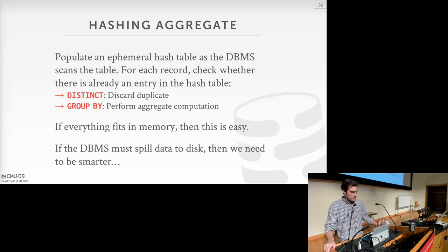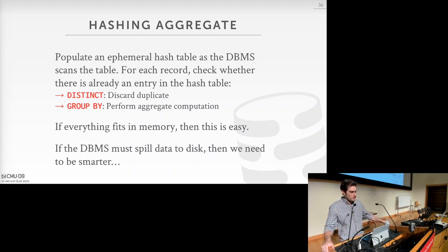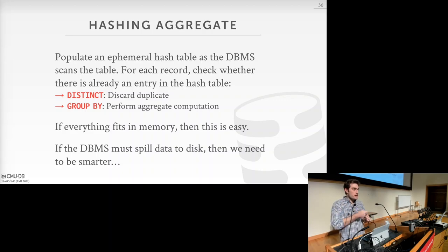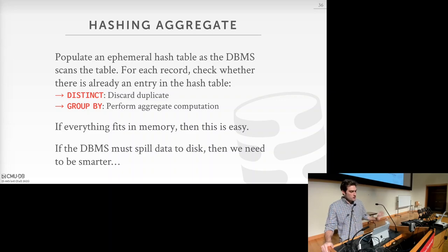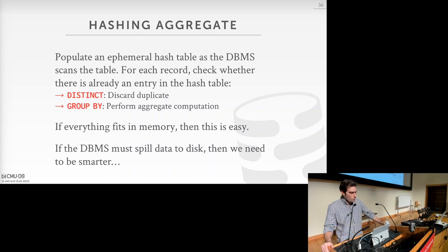To perform hashing aggregation, the DBMS builds an ephemeral hash table while scanning the table. For each record, it checks whether an entry already exists. For a DISTINCT operation, if the key already exists in the hash table, discard the tuple. For GROUP BY with commutative and associative aggregation functions (like sum, min, max), we perform the aggregate computation incrementally as we scan.